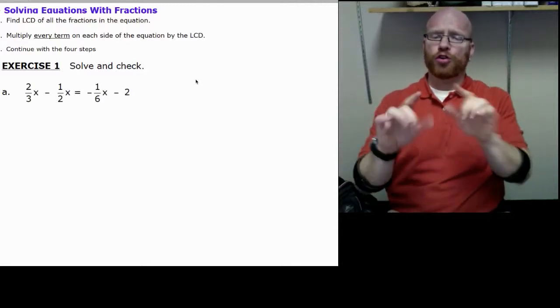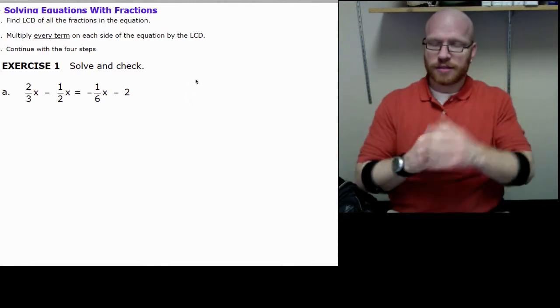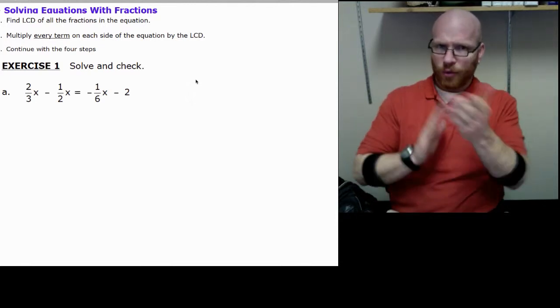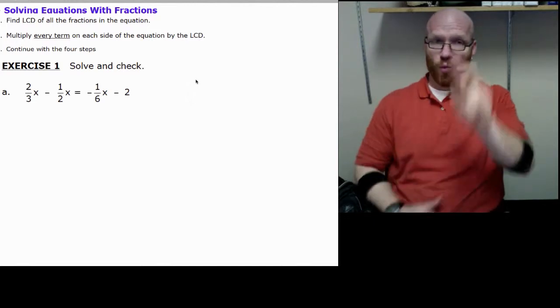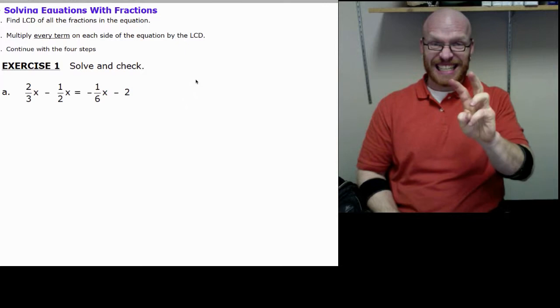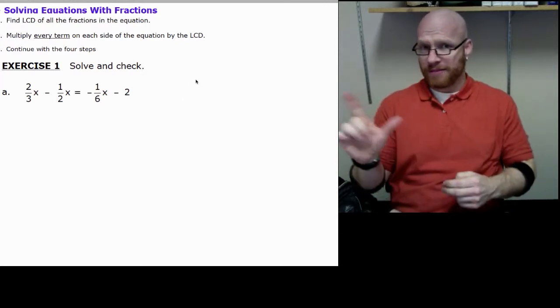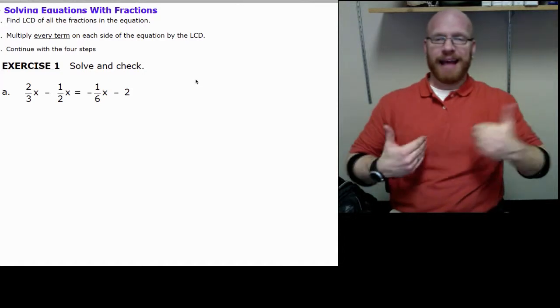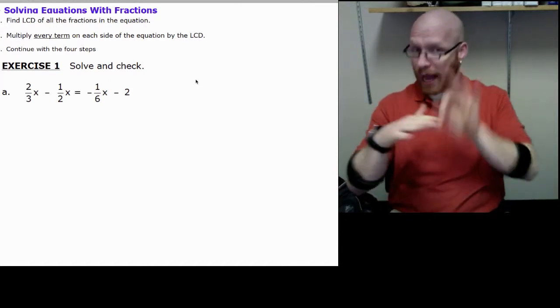Today we're going to talk about solving equations that have fractions. As you can see my example here we have two-thirds x minus one-half x equals negative one-sixth x minus two. Both the left side and the right side have equations with fractions.